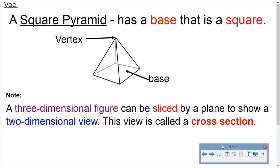Now, we're going to talk about these three-dimensional figures that, when we start slicing them by some type of plane, show a new two-dimensional view. The view is called a cross-section. So it's a slice of the three-dimensional figure into a two-dimensional figure now.